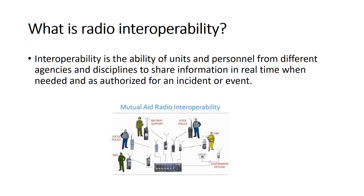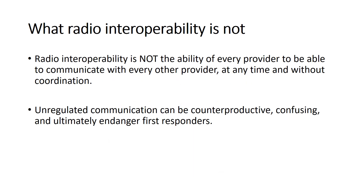Radio interoperability can be defined as the ability of public safety units and personnel from different agencies and disciplines to share or communicate information in real time when needed and as authorized for an incident or event. Radio interoperability is not the ability of every provider to communicate with every other provider at any time and without coordination.